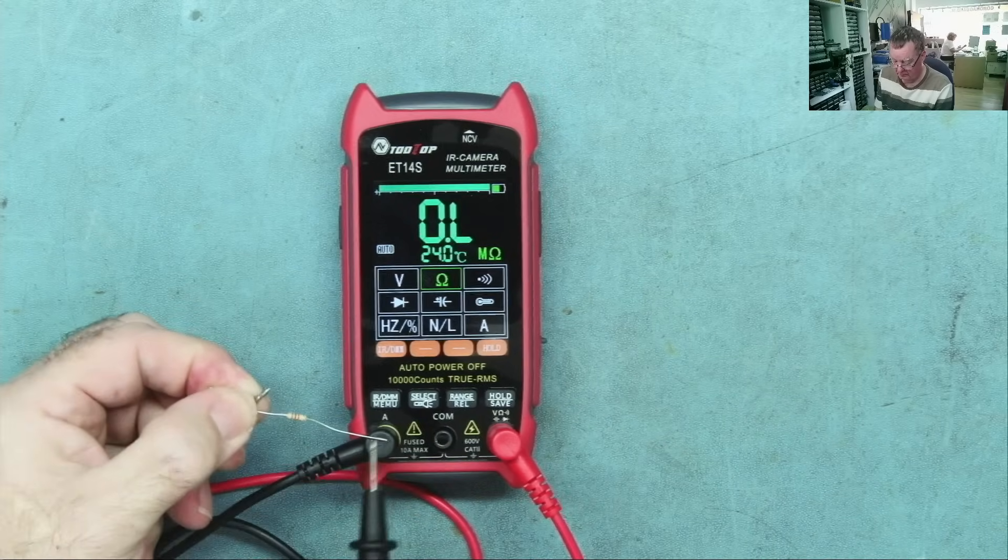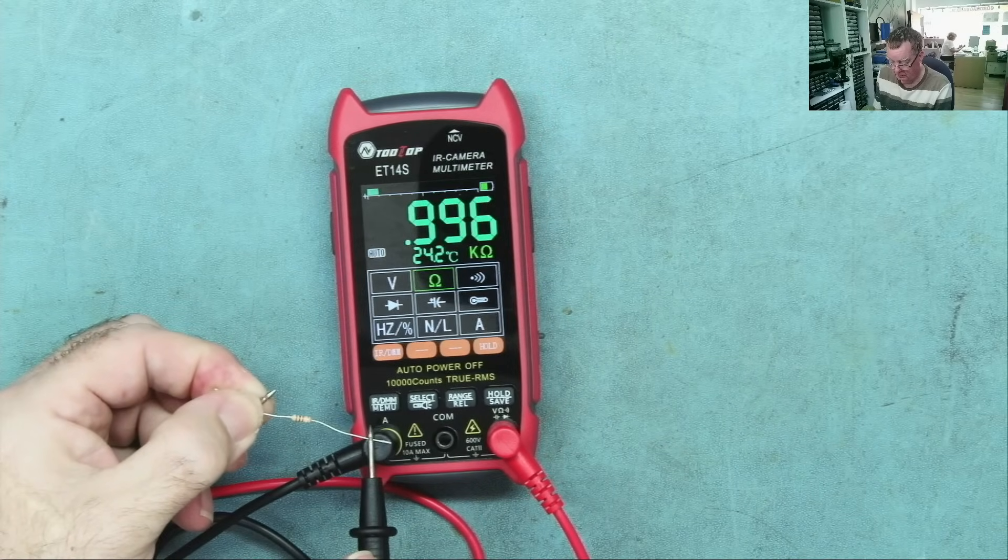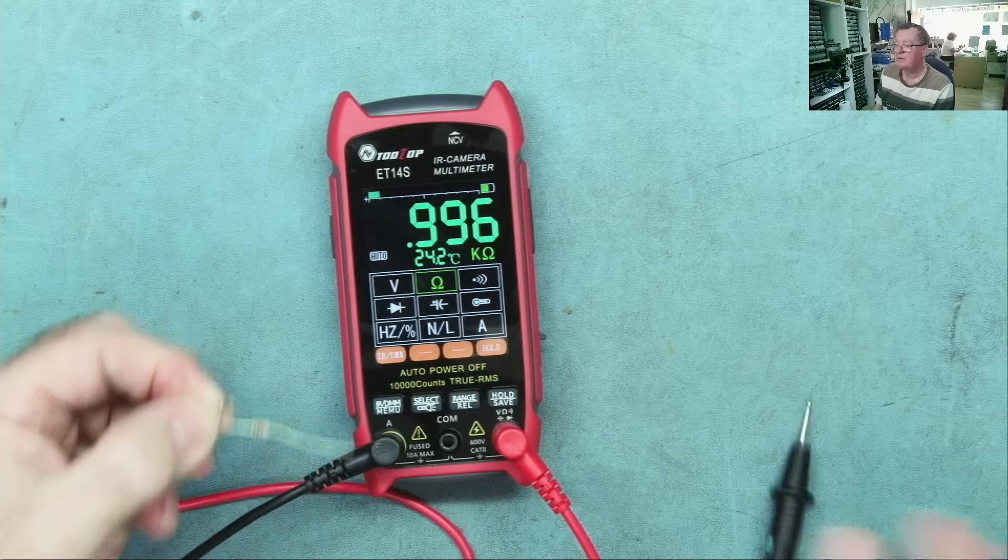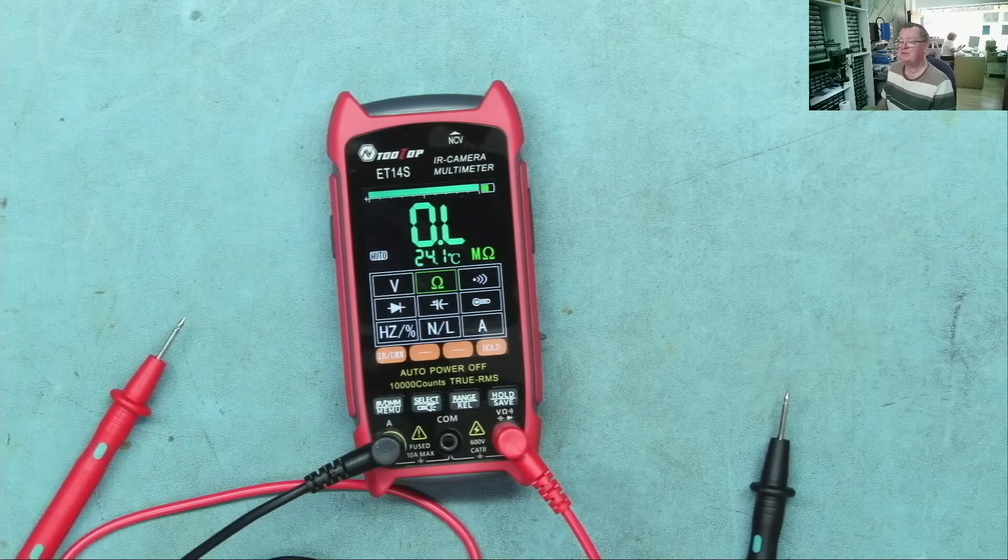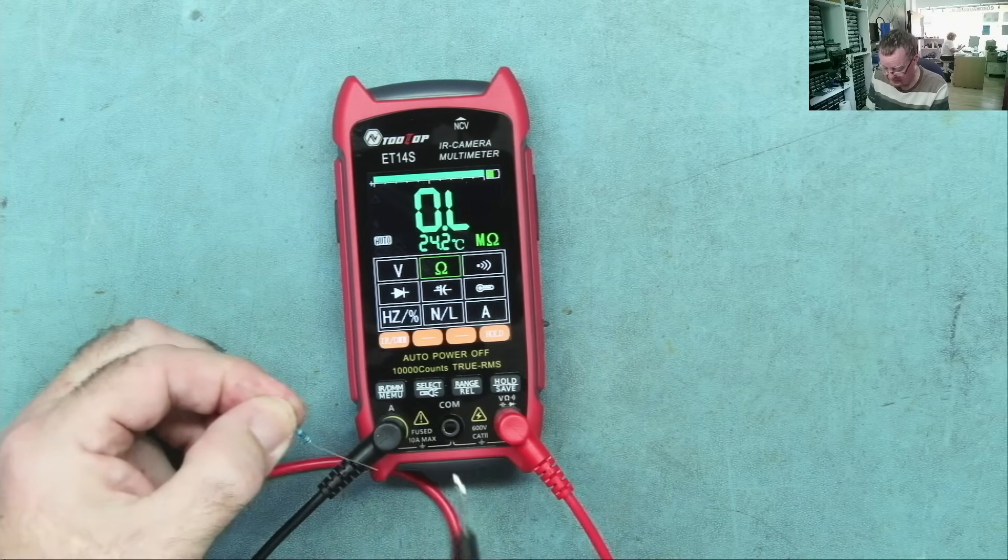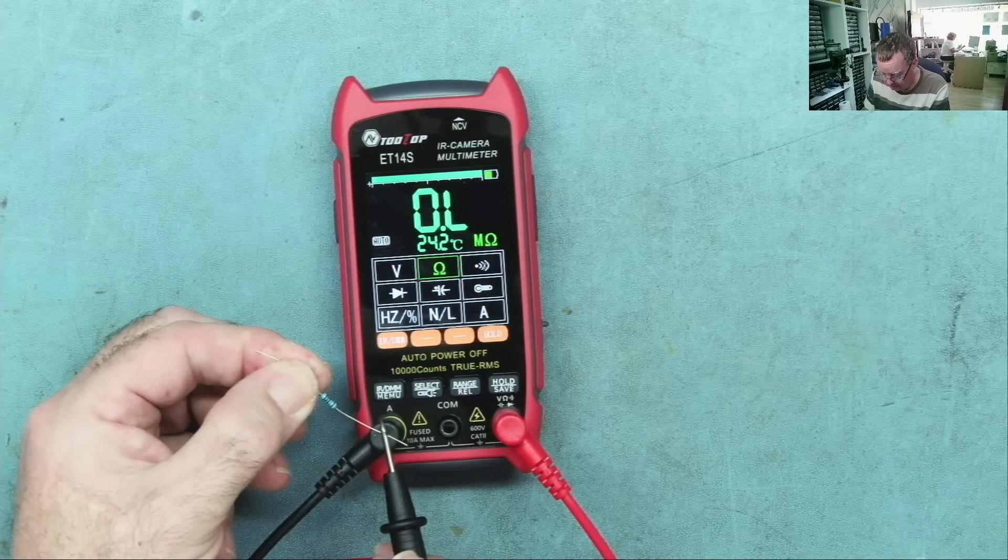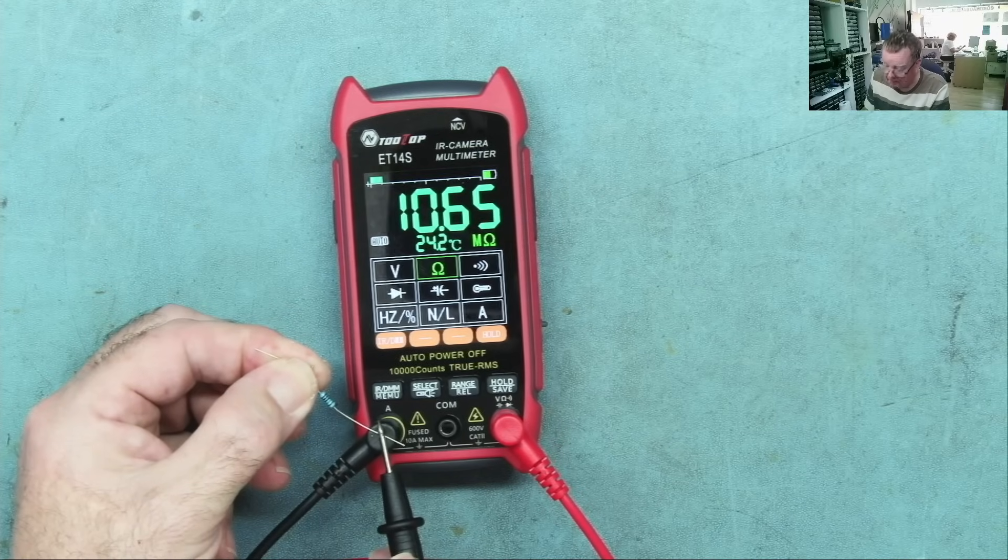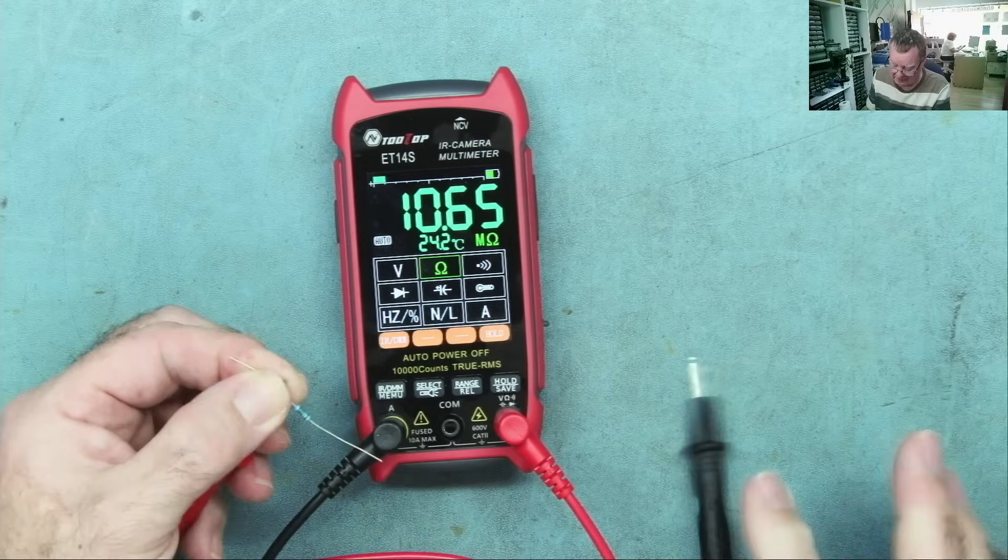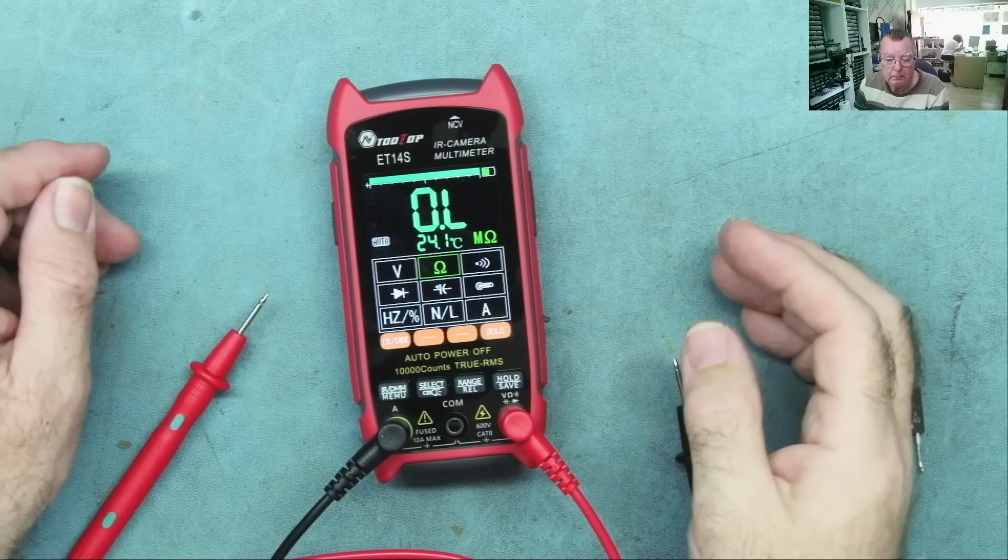1K. Yeah, pretty close to that. And these are not close tolerance resistors either. 10 meg. Yeah, not bad at all, actually. Again, they're not close tolerance.